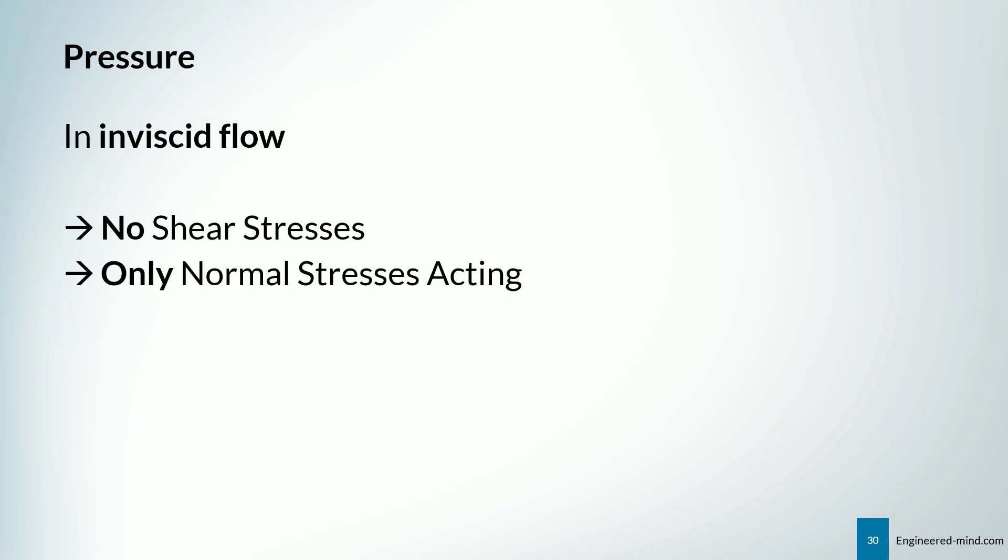For the pressure, in an inviscid flow, we have no shear stresses and only the normal stresses are acting. It's a good approach to take the pressure as the average of the normal stresses. And we take the negative direction because the pressure is acting. And we have the minus because the pressure is acting on our volume, meaning that the vector shows to our control volume and not away from it.